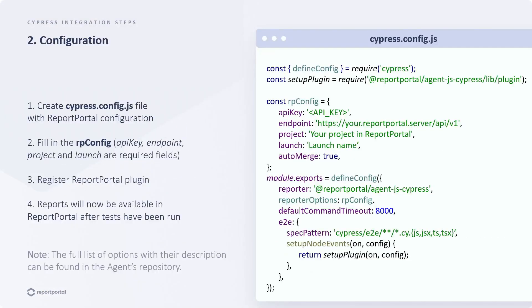The subsequent step is to set up the agent and input some essential options that will link Report Portal with your test files. If you have a Cypress config file, you will need to create one. After entering the required options, executing your tests as normal will enable the report to be accessible in Report Portal. We've outlined some basic options here, but for a comprehensive list with more details, you can refer to the agent's repository.